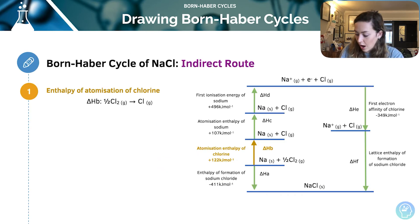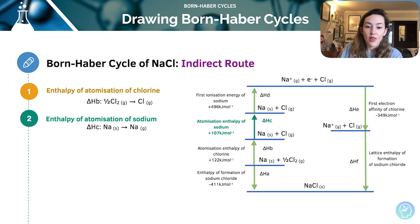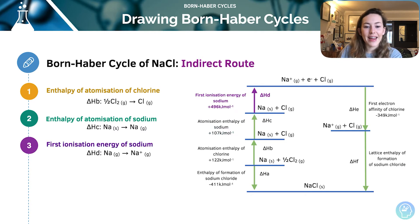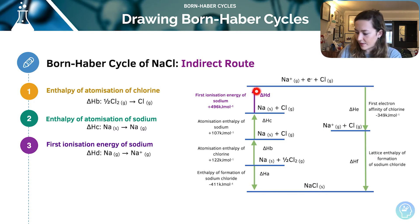Looking at the indirect route, I start where two arrows are pointing away and move upwards. This is the enthalpy of atomisation of chlorine — we have chlorine in its gaseous diatomic state being split into gaseous atoms, with a value of +122. Then we have the atomisation of sodium, also endothermic. Then the first ionisation energy of sodium — atomise first, then do your ionisation energies. We're taking one mole of atoms and forming one mole of gaseous ions.